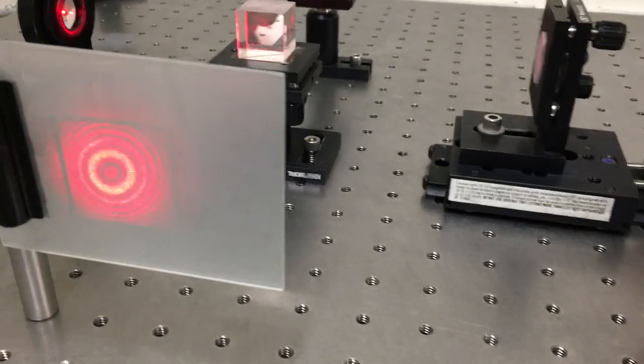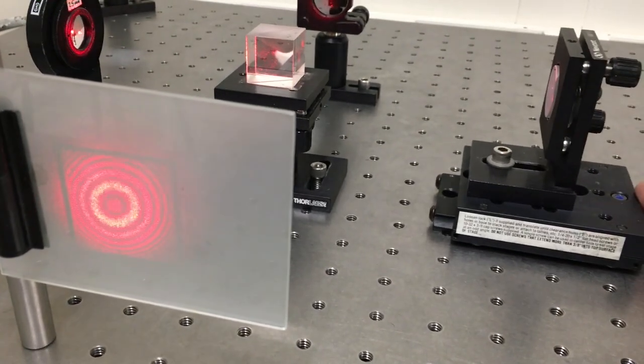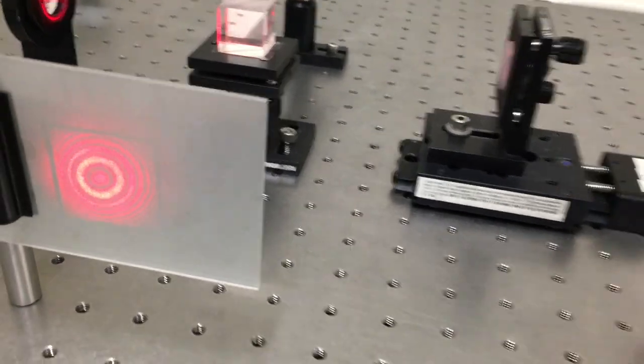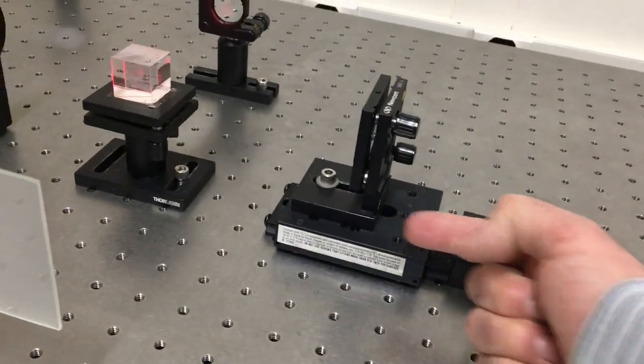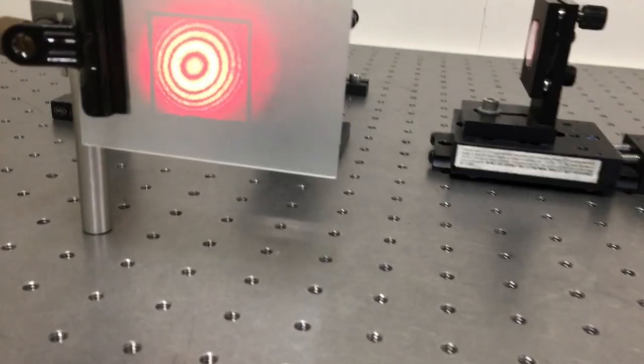So remember that. When the mirror is in its current position and I push on the back, the rings move inward. Now I'm going to turn the knob and move the mirror continuously in that direction and let's see what happens to the interference.